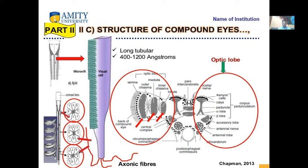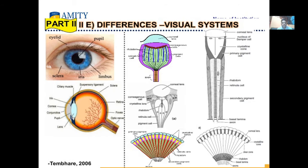This is the structure of compound eyes. You can see many lenses are there. Due to multiple lenses, the power of vision is high in insects in comparison to human beings. Human beings have only one eye lens, and insects have many eye lenses. Insects have more power in vision. If they are flying in the sky, they are seeing the whole sky, but this is not the case in human beings. Human beings are not able to visualize all around when they are running or in motion.